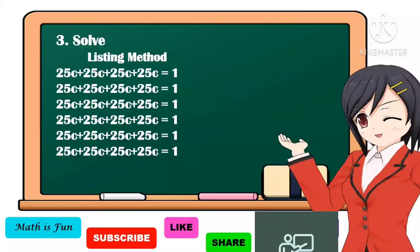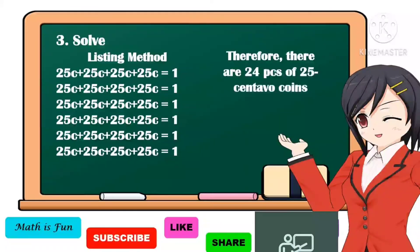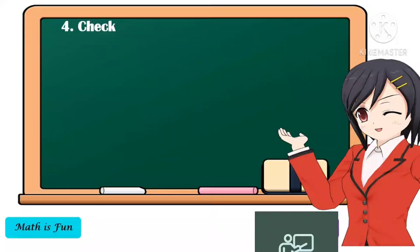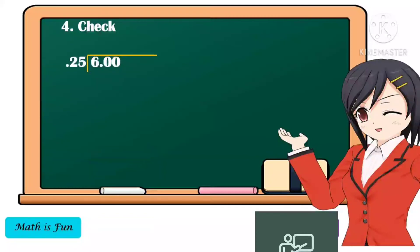We can also use multiplication. Therefore, there are 24 pieces of 25-centavo coins in 6 pesos. The last step is to check. In this problem, we're going to use the idea that 25 centavos is equal to 0.25. So we can divide 6 pesos by 0.25. In dividing decimals, we should make our divisor a whole number by moving the decimal point to the right of the last digit.